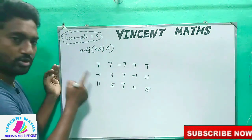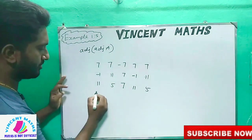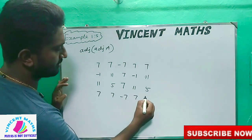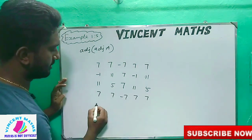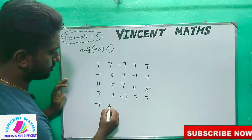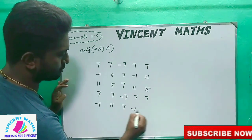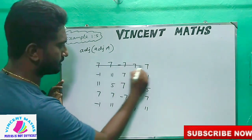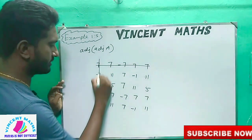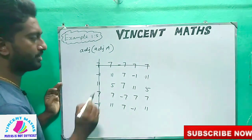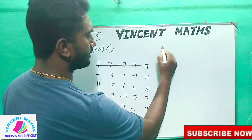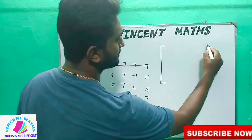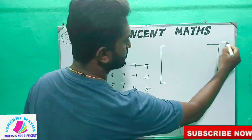Next, we will delete two rows — the first row and second row. The entries are: 7, 7, minus 7, 7, 7; next row: minus 1, 11, 7, minus 1, 11. Then we will delete the first row. Now, how do we do this? We will expand the matrix and transpose.